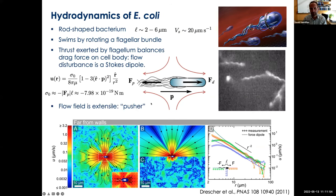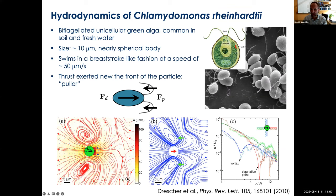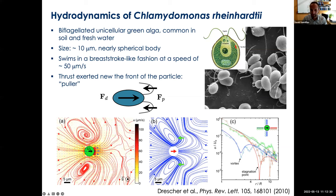We can do the same for Chlamydomonas, which has a nearly spherical body and two flagella performing a breaststroke. Similarly, the two flagella exert a propulsive force balanced by the drag on the cell body. To leading order we have a dipole, except that now the sign is reversed — the forces point inward instead of outward. This was also confirmed experimentally by Drescher, showing that in the far field the flow looks like a contractile dipole. We call this particle a puller because it pulls itself through the fluid.